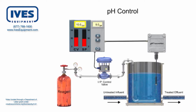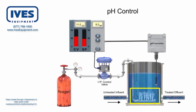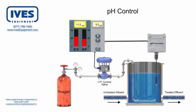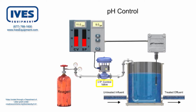If the values are not equal, the controller sends a signal to the control valve that applies carbon dioxide to the tank. The reagent is applied to the tank at varying rates to precisely control the pH level. With the pH level at 11 detected by the sensor, the controller commands the control valve to open and introduce more carbon dioxide.